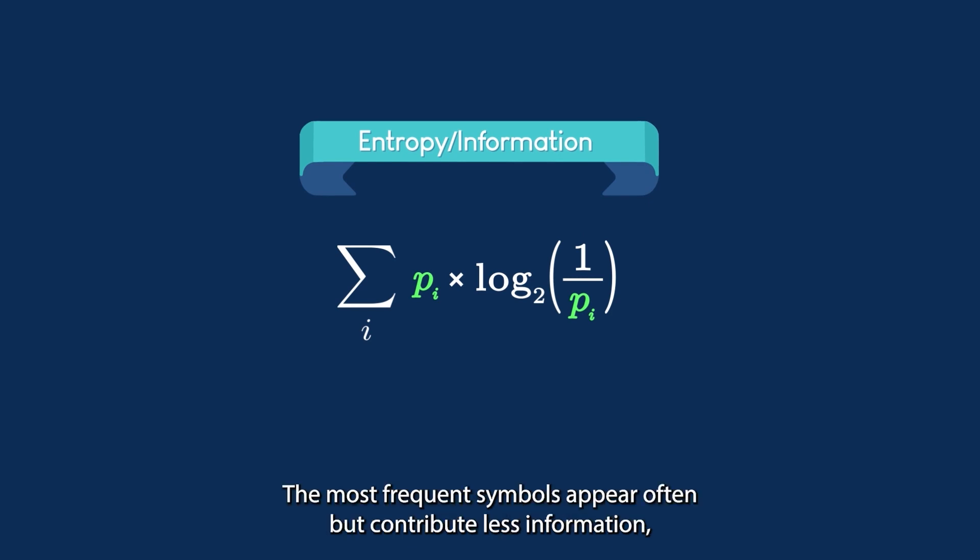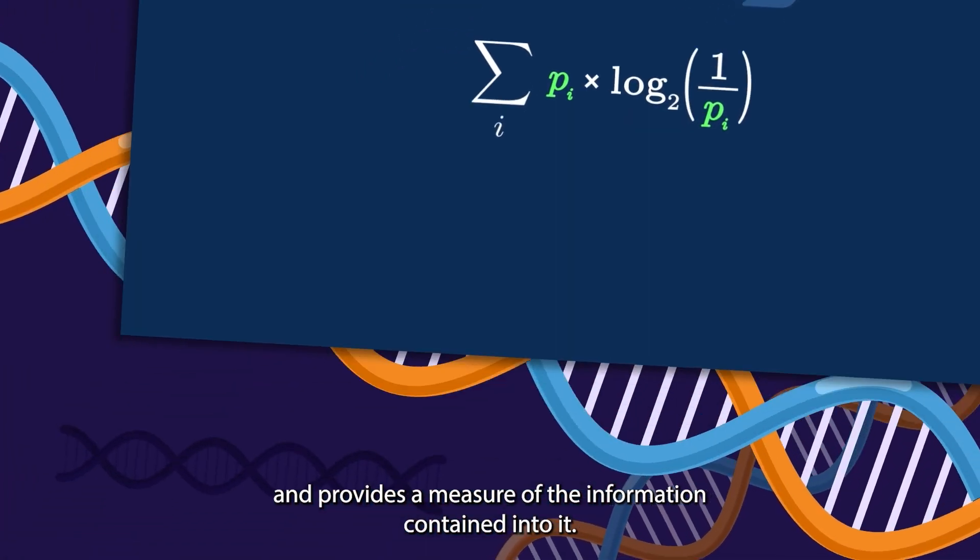The most frequent symbols appear often but contribute less information, while the most rare symbols provide a lot of information but they are less frequent. This formula averages all of it and provides a measure of the information contained into it.